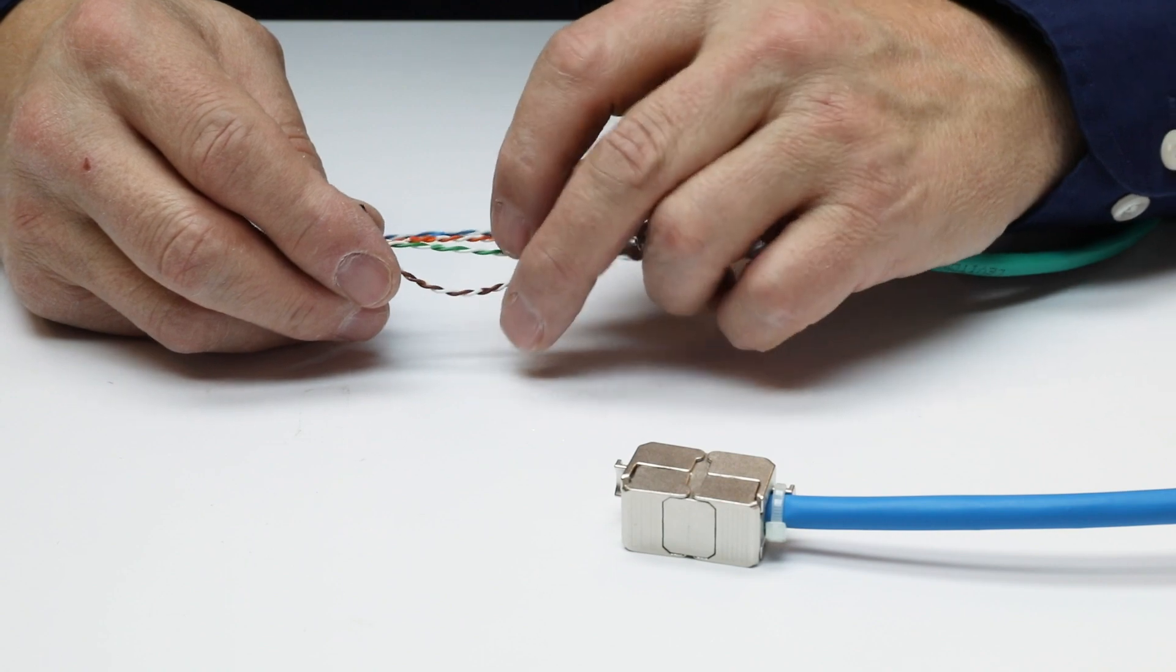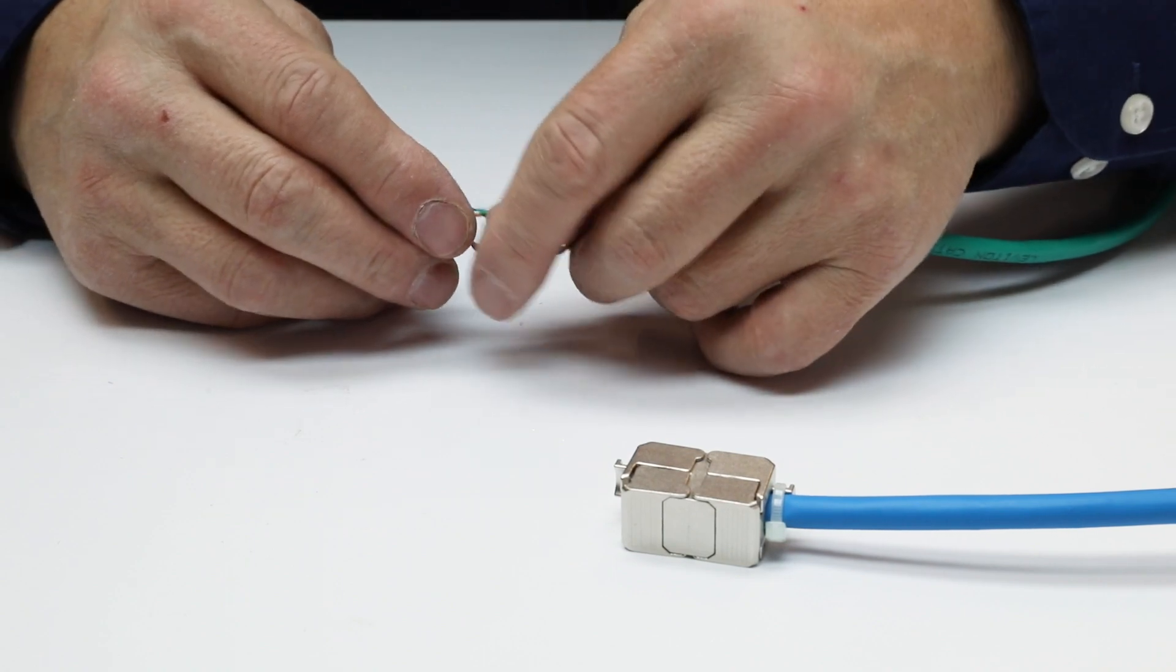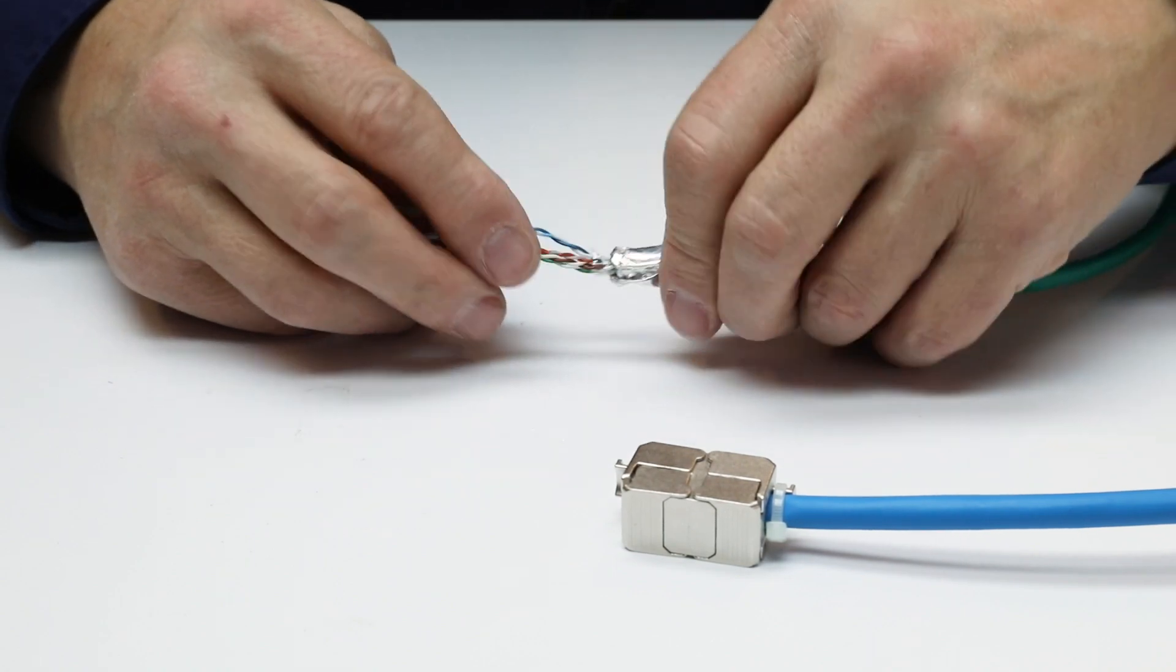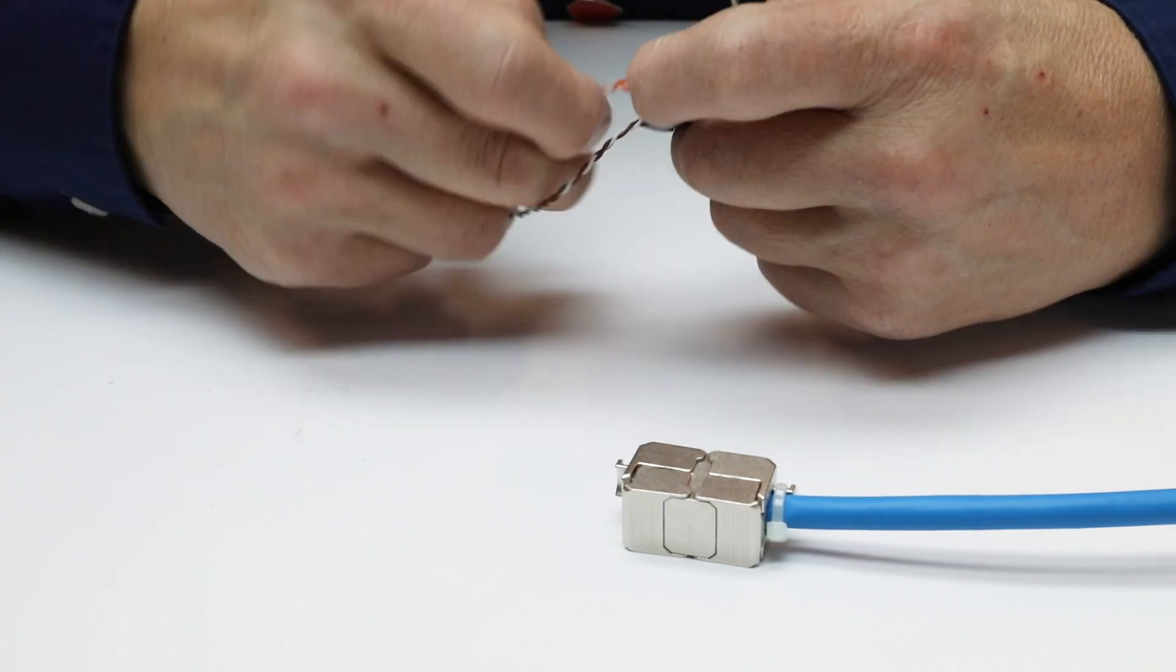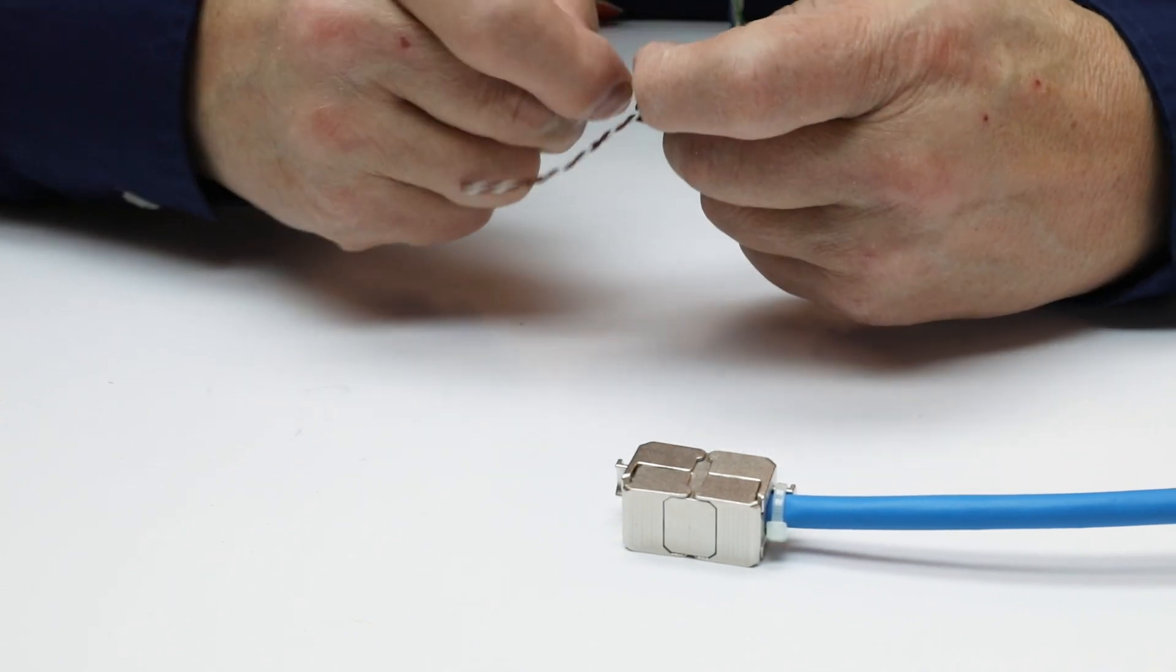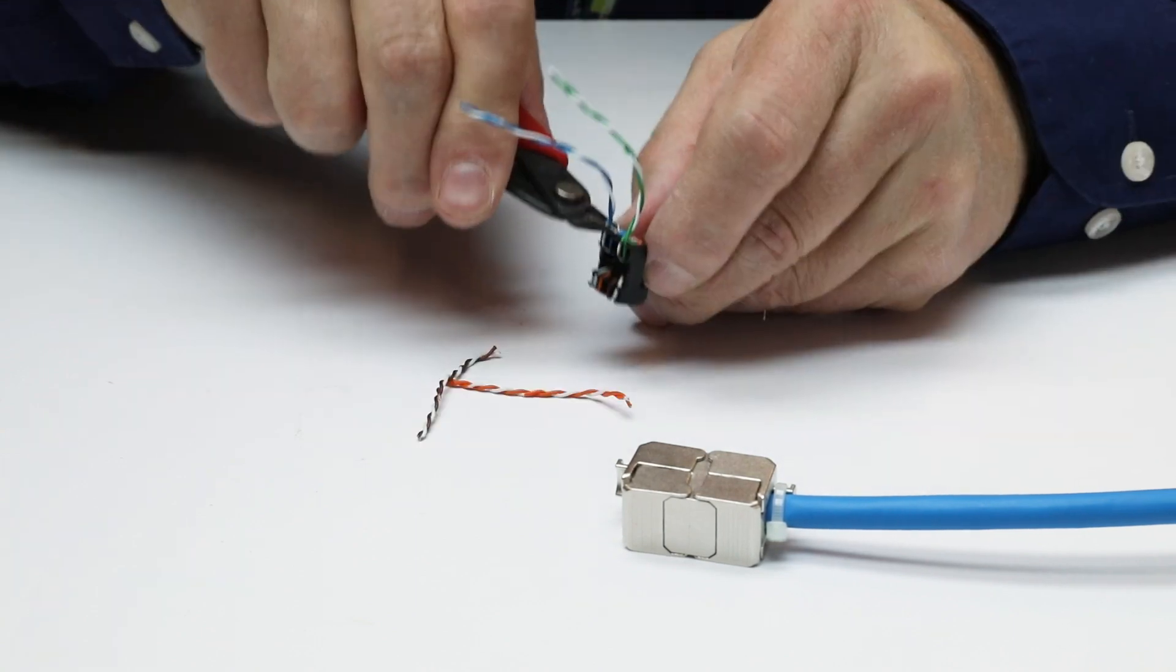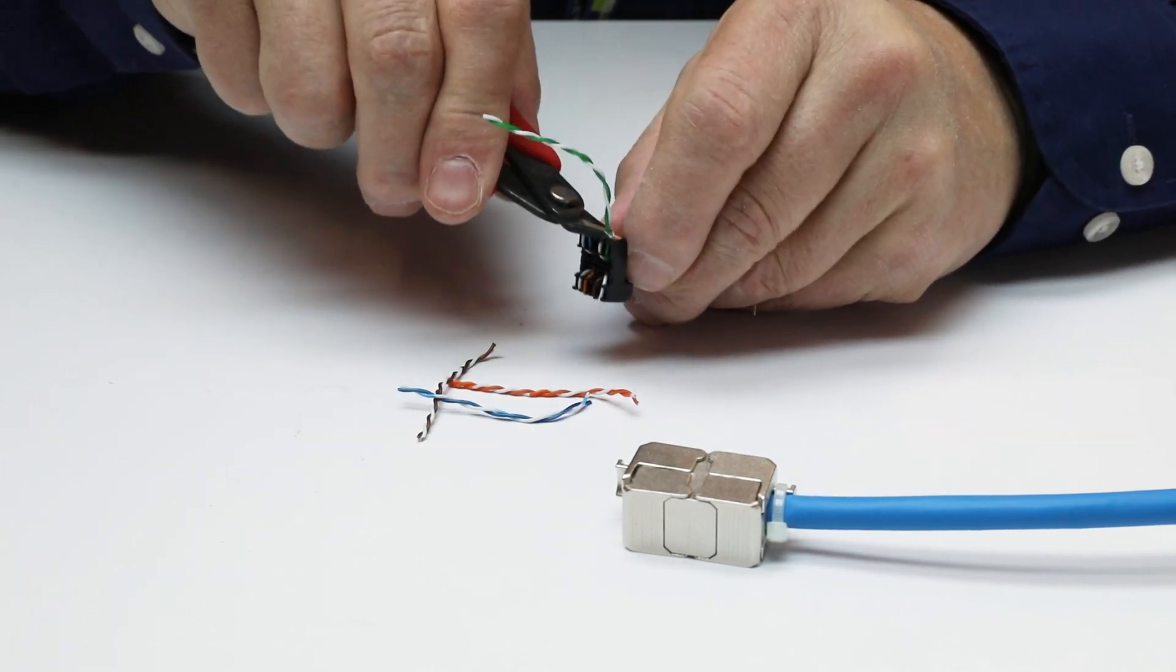Thread the pairs into the wire manager per the T568A or T568B wiring pattern. Observing pair polarity, pull each wire into its proper slot in the wire manager. Trim all wires flush with the sides of the wire manager.